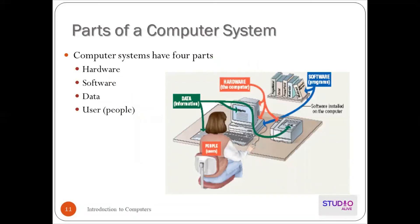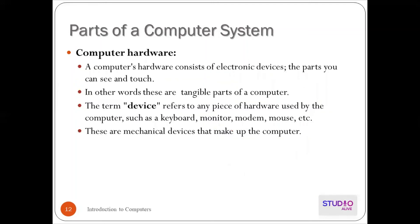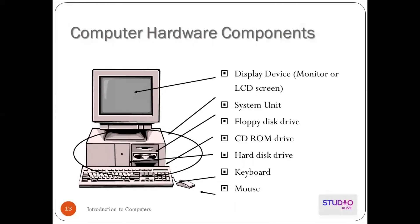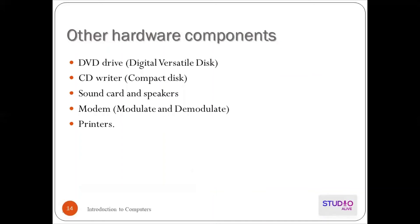There are four parts of the computer. Computer hardware consists of electronic devices — the parts you can touch. They are tangible parts. The term device refers to any piece of hardware used by the computer, such as keyboard, monitor, modem, and mouse. These include display devices like monitors and LCDs, system units, floppy disks, CD-ROMs, hard disk drives, CPUs, keyboards, and mice. Other devices include DVD drives, CD drives, sound cards, speakers, modems, and printers.